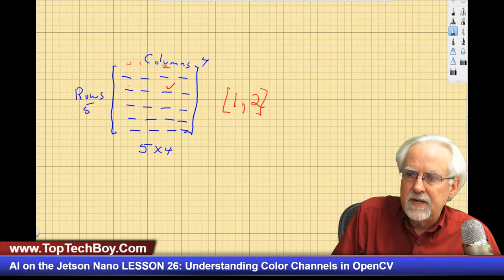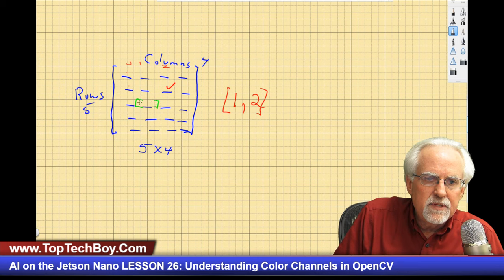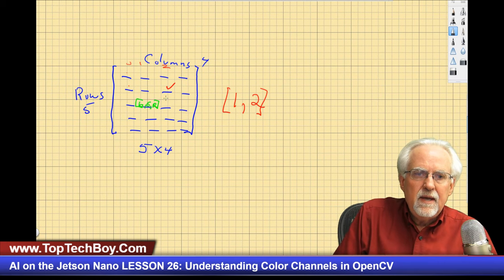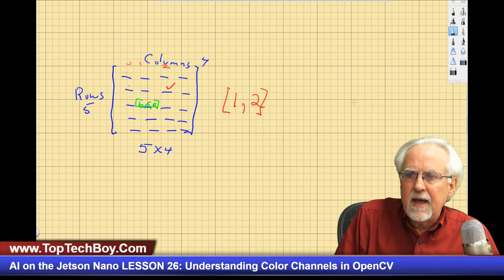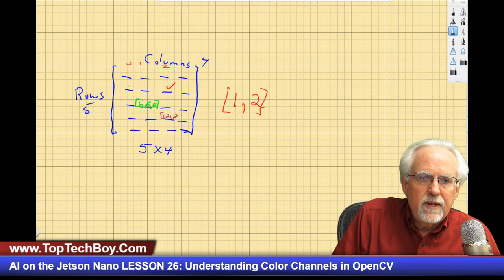Now the next thing you have to understand is when you go to one of those positions, there is not one number in it — there are three numbers: the value of blue, the value of green, and the value of red. So you might have a number like 121, 25, 23 at a given pixel position.